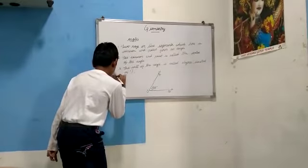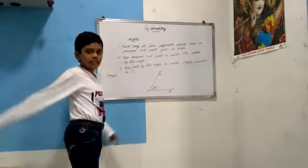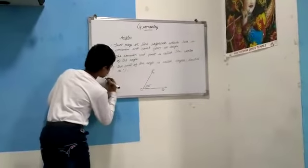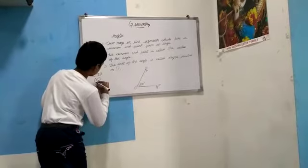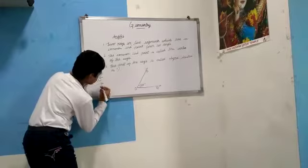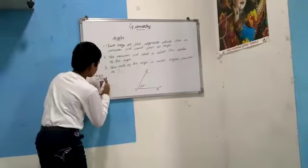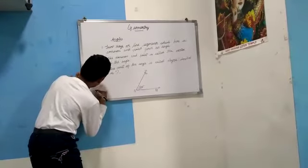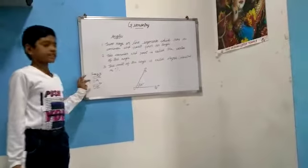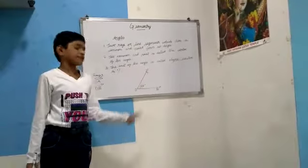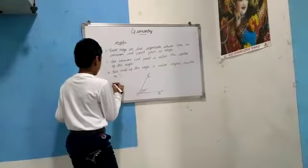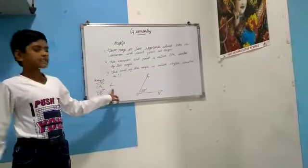Two rays are there in angles — that is, two rays or line segments. The two rays are ray OA and ray OB. These are the two rays of this angle, which measures 85 degrees. Now let's see the symbol of angles. This is the symbol for angle.